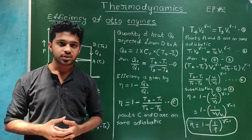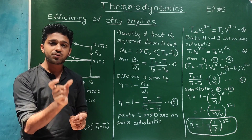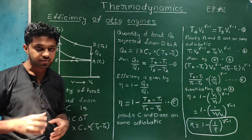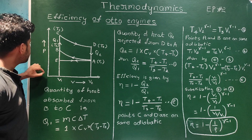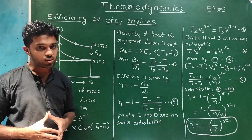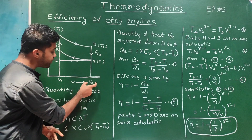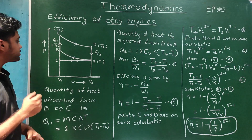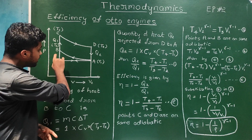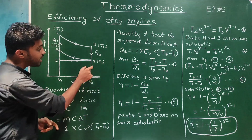We are going to take a look at the Otto cycle graph. Along the y-axis we have pressure, and along the x-axis we have volume. Here V2 is greater than V1. There is a point E and a point A. The charging stroke involves a petrol and air mixture entering the cylinder, where V2 is the larger volume and the temperature is T1.